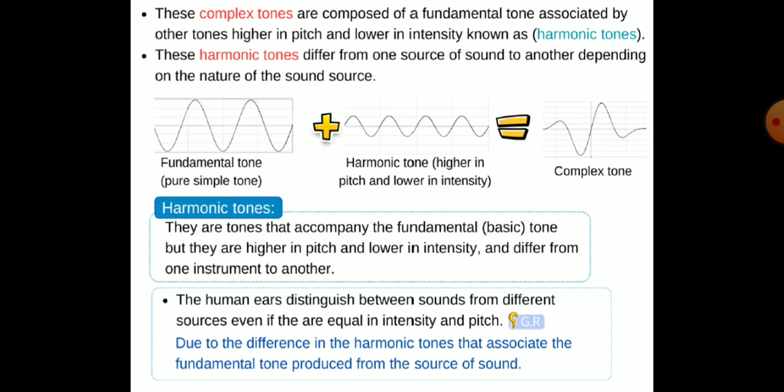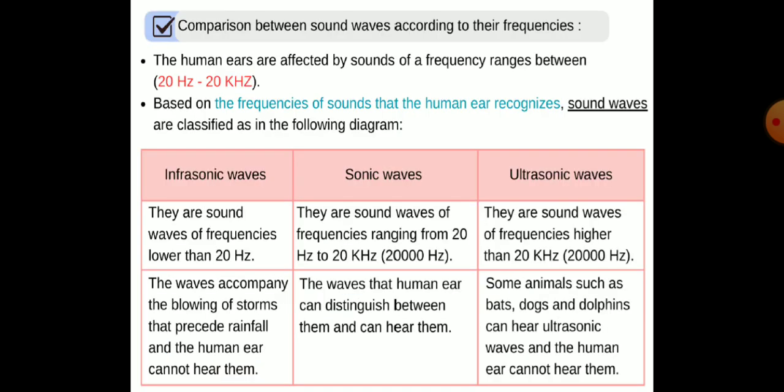Give reason: the human ear can distinguish between sounds from different sources even if they are equal in intensity and pitch, due to the difference in harmonic tones associated with the fundamental tone produced from the source of sound.